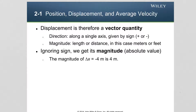I want to stress one more time the importance of signs when displacement is calculated. Since displacement is a vector quantity and has direction, it is very important to be careful with the signs of the positions of the object as it's moving, because the correct choice of signs will lead to the correct sign for the displacement.